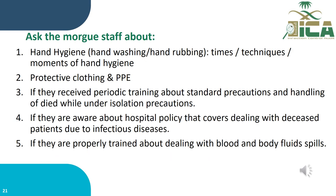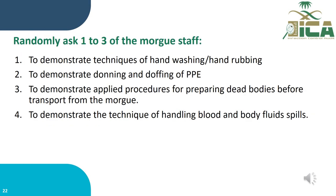Ask the morgue staff about: (1) hand hygiene — handwashing and hand rubbing times, techniques, and moments of hand hygiene; (2) protective clothes and PPEs; (3) whether they received periodic training about standard precautions and handling of the deceased while under isolation precaution; (4) whether they are aware of the hospital policy covering deceased patients due to infectious disease; (5) whether they are properly trained about dealing with blood and body fluid spills. Randomly ask one to three morgue staff members to demonstrate: techniques of hand hygiene and hand rubbing; donning and doffing of PPEs; the applied procedure for preparing dead bodies before transport from the morgue; and the technique for handling blood and body fluid spills.